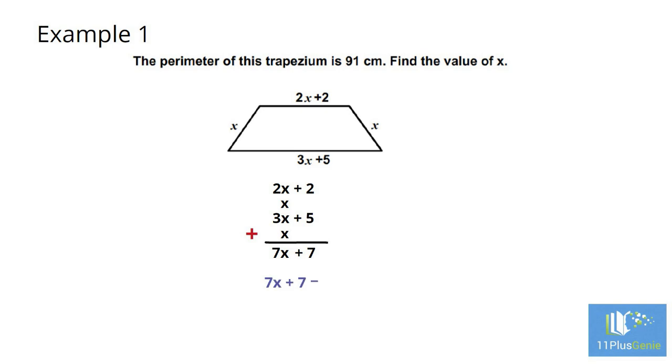7x plus 7 equals 91. We subtract 7 from both sides to get 7x equals 84. We now divide both sides by 7 to get x equals 12.